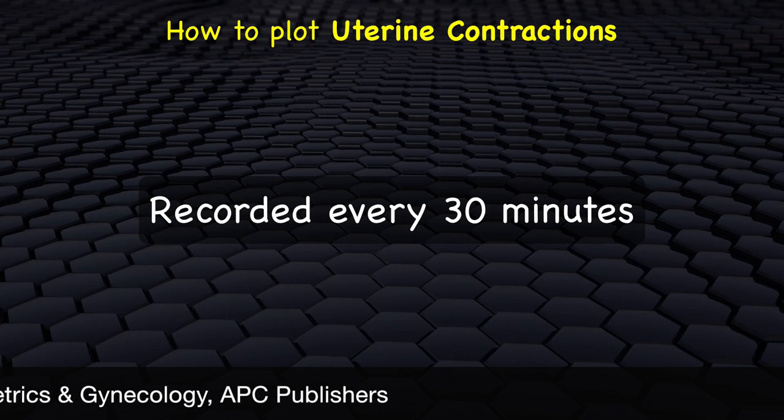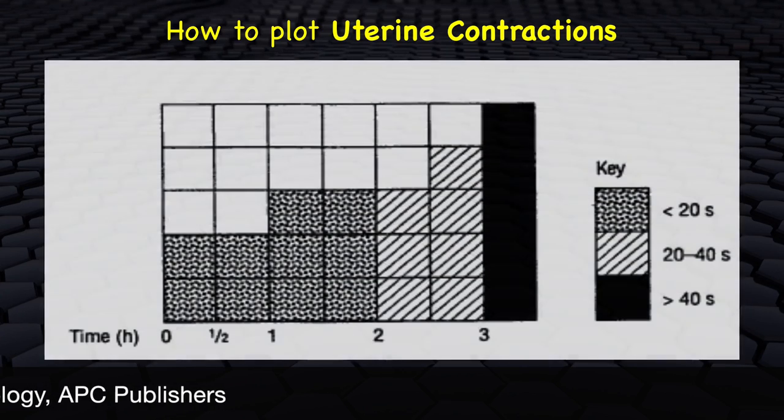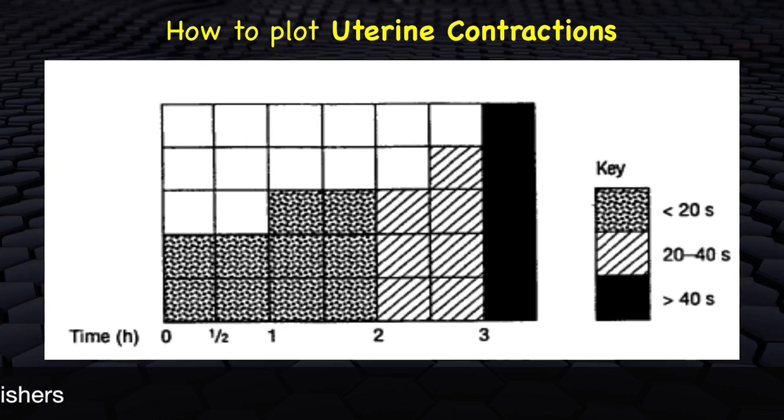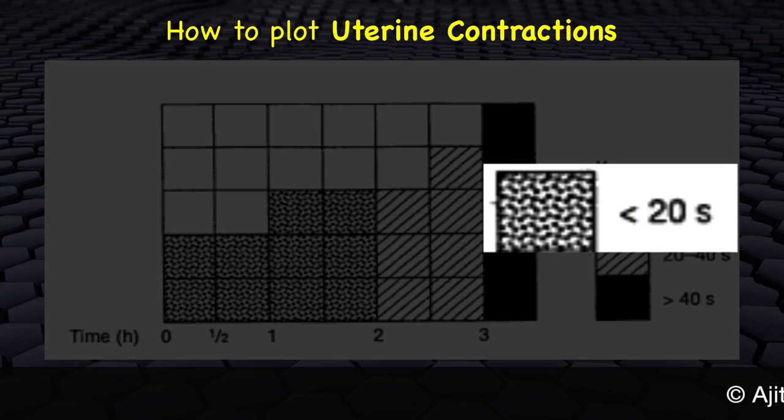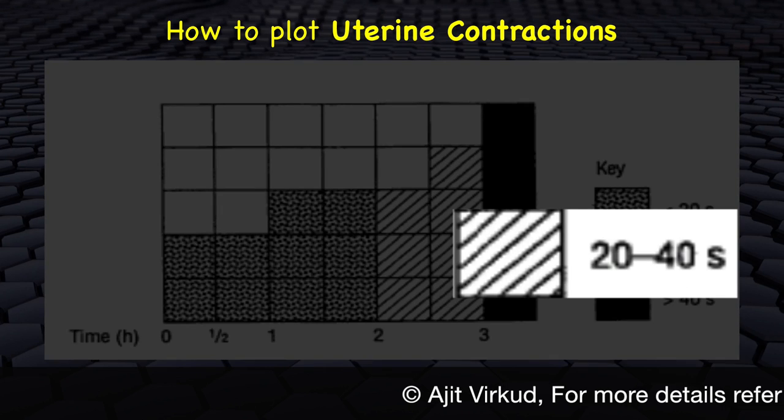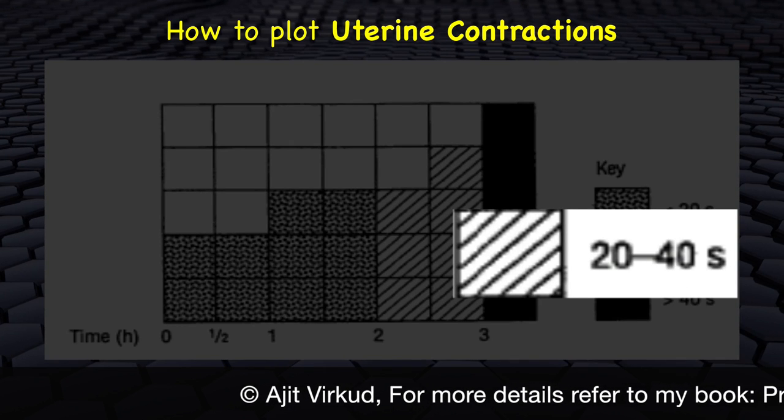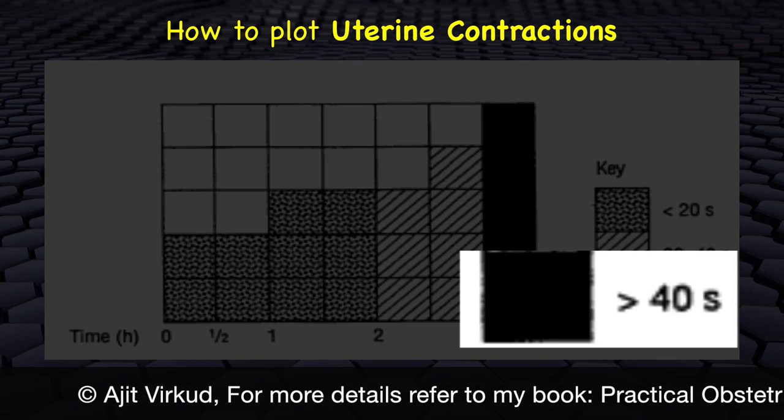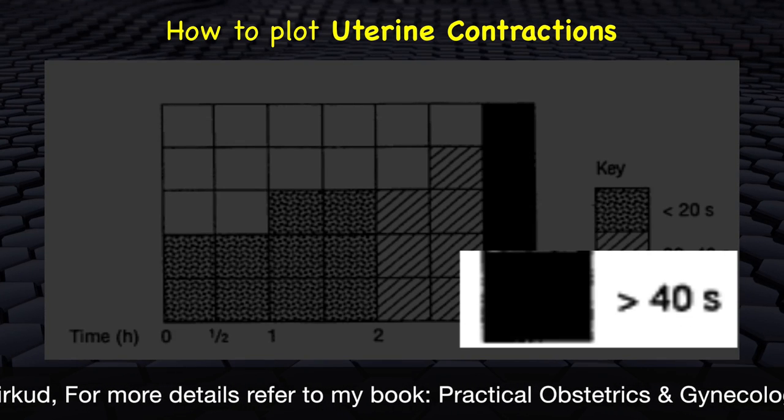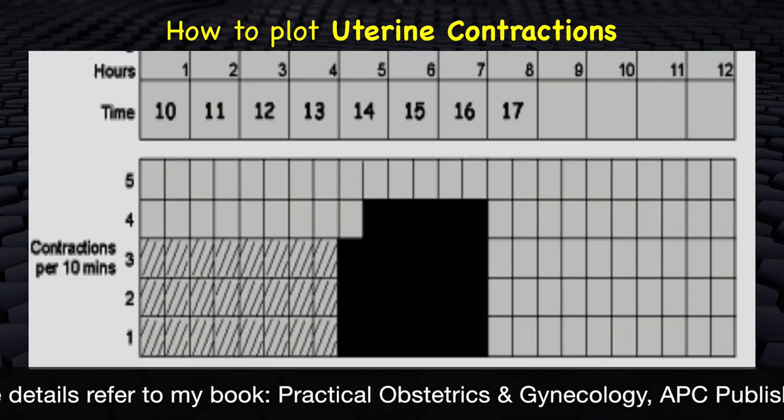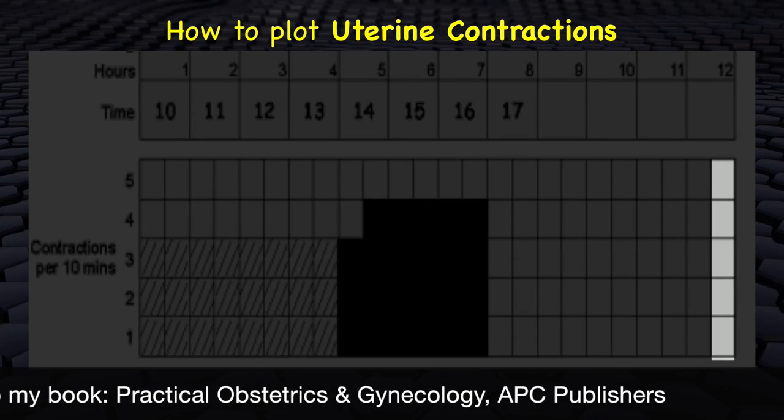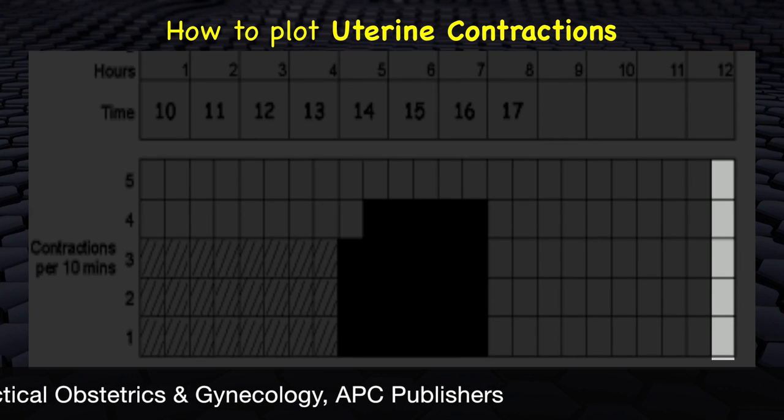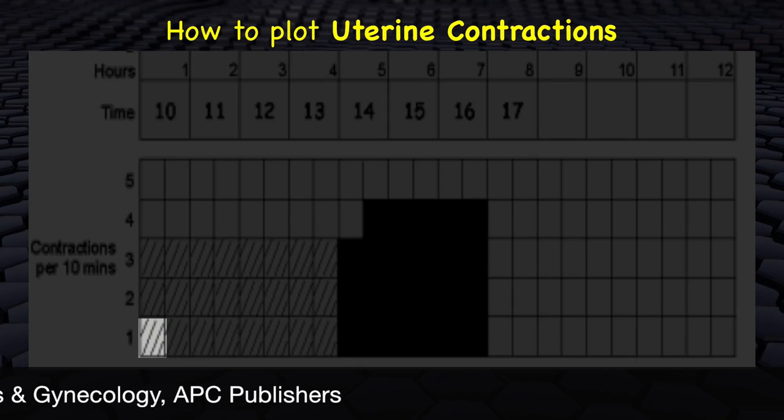Uterine contractions are observed and recorded every 30 minutes. They are plotted as number of contractions in a 10 minute period. Their duration is recorded in seconds. A visual key for recording contractions is as follows. A square with dot represents uterine contractions less than 20 seconds duration. A square with dashes represents uterine contractions of 20 to 40 seconds duration. And a black box represents contractions greater than 40 seconds. Below the timeline are five blank squares going across the entire length of the partograph. Each square represents one uterine contraction.